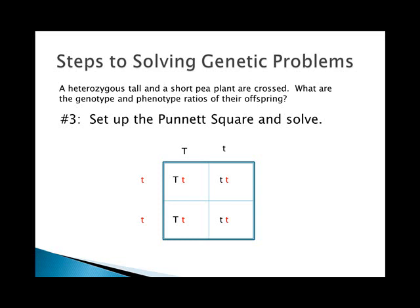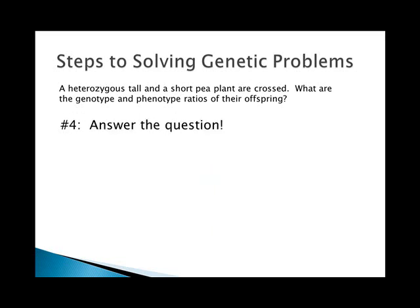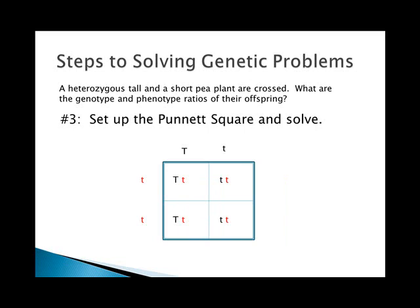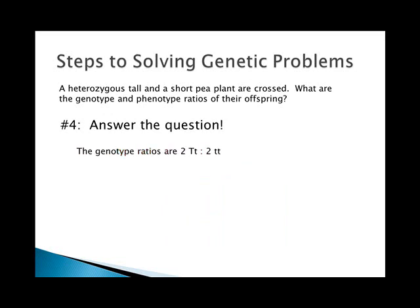This is the step that people often miss: answer the question. It's asking for the genotype and phenotype ratios of their offspring. Genotype is the letters, so looking at our Punnett square we have two big T little t's and two little t little t's — a 2:2 ratio.